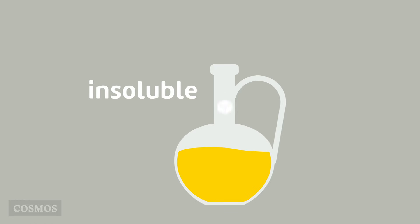For example, when you dissolve sugar in water, sugar is the solute and water is the solvent. We can also say that sugar is soluble in water because it dissolves easily. But sugar is insoluble in other liquids, such as oil.